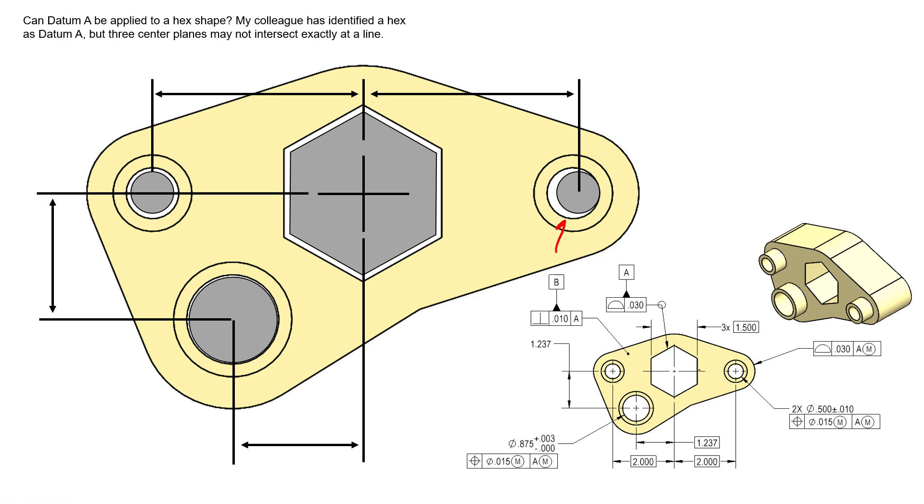In other words, if we take the size defined by our basic dimensions and understand what the maximum material boundary would be based on our profile tolerance—which really would be three sets of parallel faces spaced apart an inch and a half, and each one of those faces can deviate in and out 30 thousandths—our hexagon shape would be a hexagon whose flats are 1.5 minus 30 thousandths, and that is our true MMB boundary.